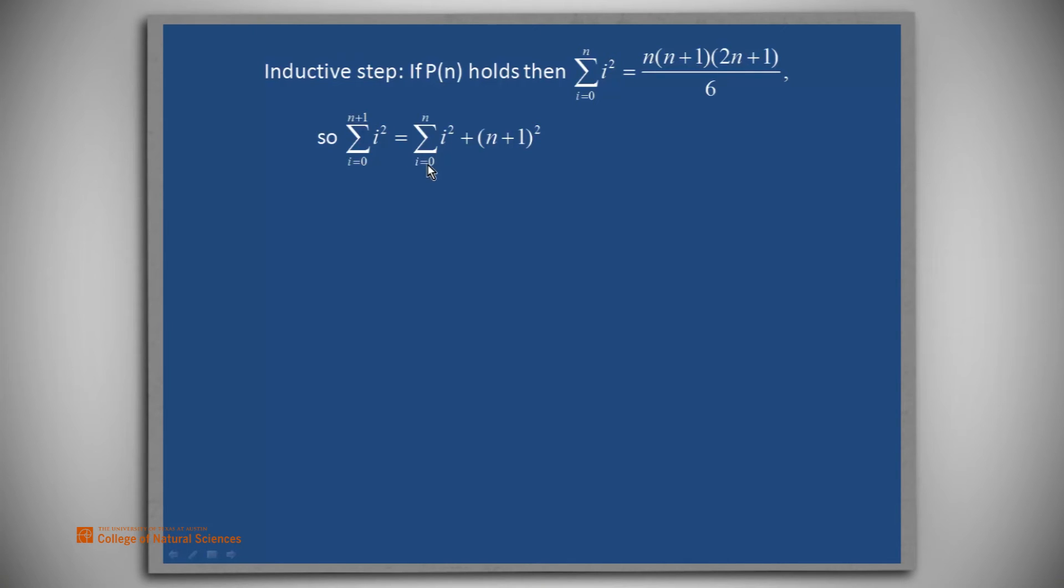and then we will have a summation from 0 to n plus simply the last term. This is a common thing to do in proofs by induction that involve summations or products. You strip off the last term.